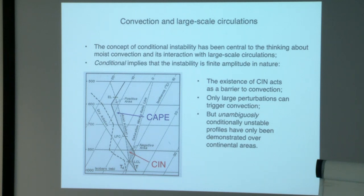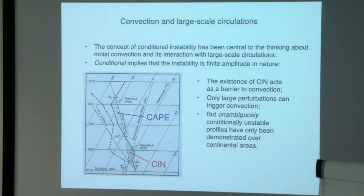This has led to the belief that convection in most of its forms is triggered—you need a large enough perturbation to overcome the CIN and then let the CAPE be released. This also implies that CAPE can build up with time through large-scale radiative processes before it is actually released. A large amount of CAPE does occur, especially over the continents—seen in very severe storms such as the supercells that generate tornadoes. But the unambiguous evidence of conditionally unstable profiles has really only been shown to exist over continental areas.